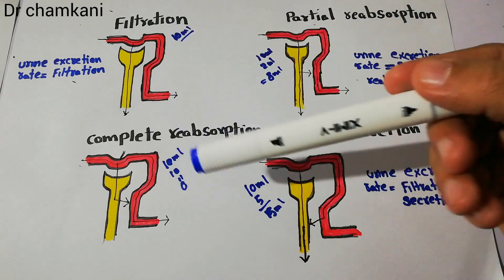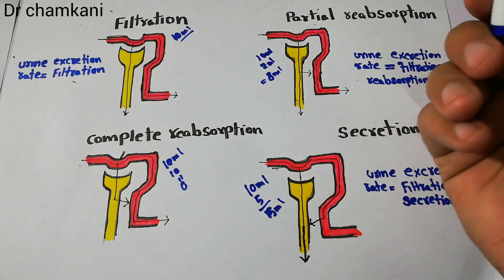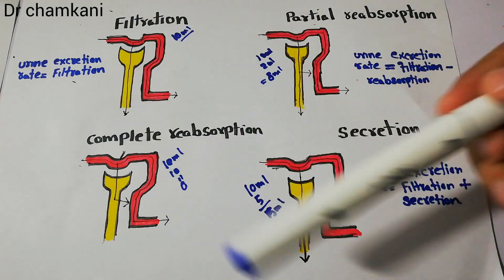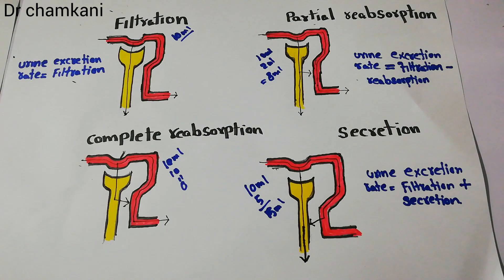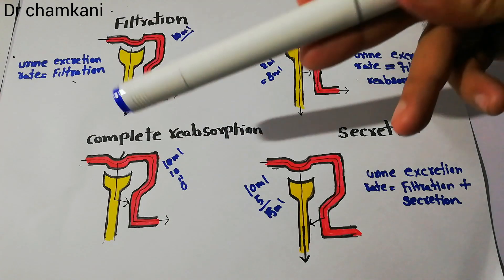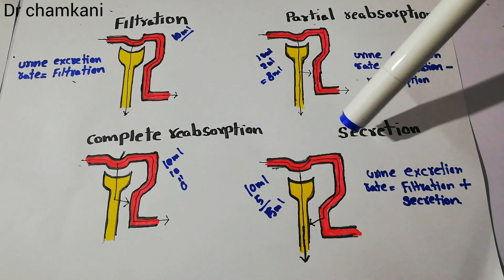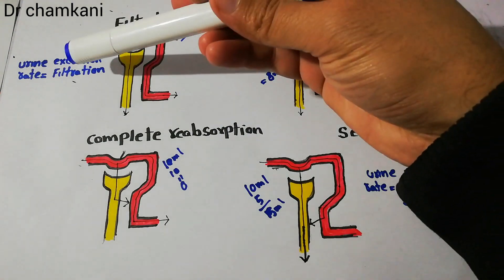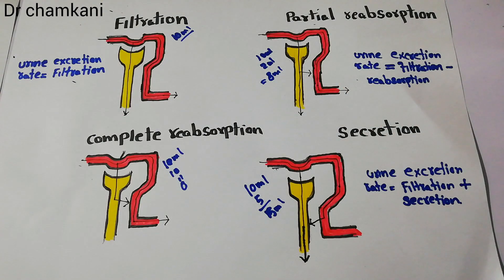These steps determine the urine excretion rate of any substance. In our next lecture, we will discuss in detail the different types of substances — those which are only filtered, those which are filtered and partially or completely reabsorbed, and those which are filtered and secreted as well. That's all about the filtration, reabsorption, and secretion processes involved in urine formation and the urine excretion rate of different substances. Thanks for watching.